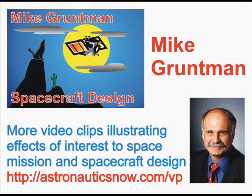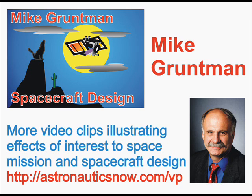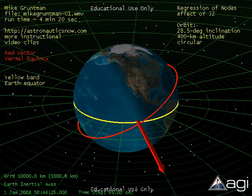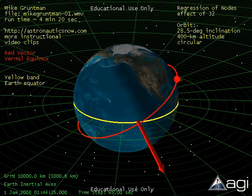The coefficient J2 in the expansion of the Earth's gravitational potential describes this most pronounced deviation from spherical symmetry of the shape of our planet and of its mass distribution.